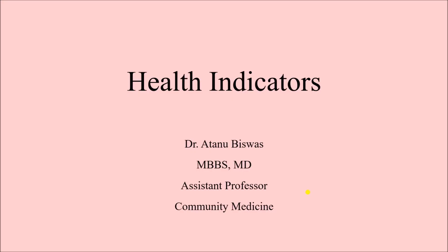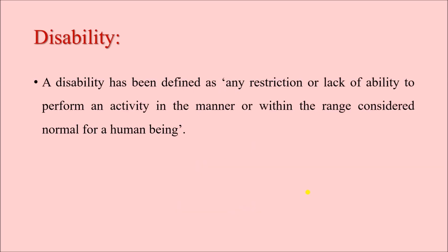We are going to continue with health indicators and today we shall talk about the different disability indicators. I am making a separate video on disability indicators because this is quite important in the context of your exam — you can face short notes or viva questions from this part alone. Before we begin, we need to know what disability is. Disability can be defined as any restriction or lack of ability to perform an activity in the manner or within the range considered normal for a human being.